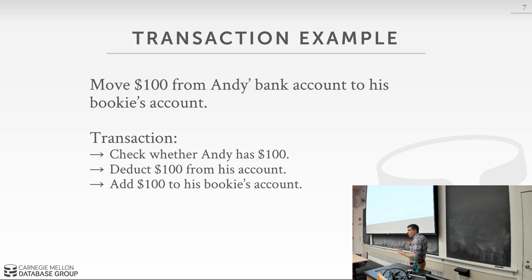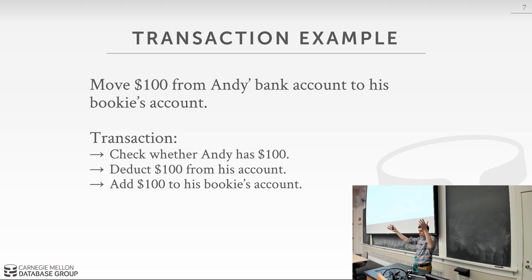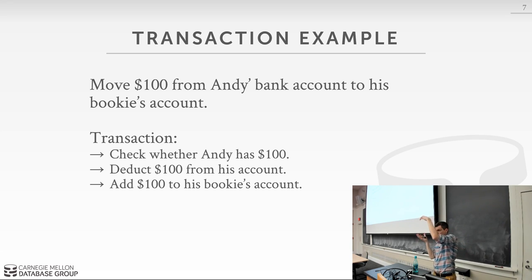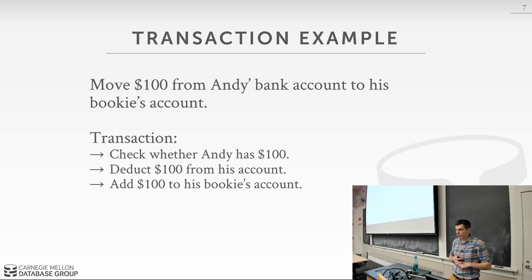Using the money transfer example: say I have a gambling problem and need to send $100 from my account to my bookie's account. That's the higher-level function. We implement it through three steps: check whether I have $100, take $100 out of my account, then put $100 in the bookie's account. Those three steps comprise a transaction. We want all these steps to occur safely and atomically, without seeing the effects of other transactions running at the same time — these are the guarantees a DBMS ensures for us.